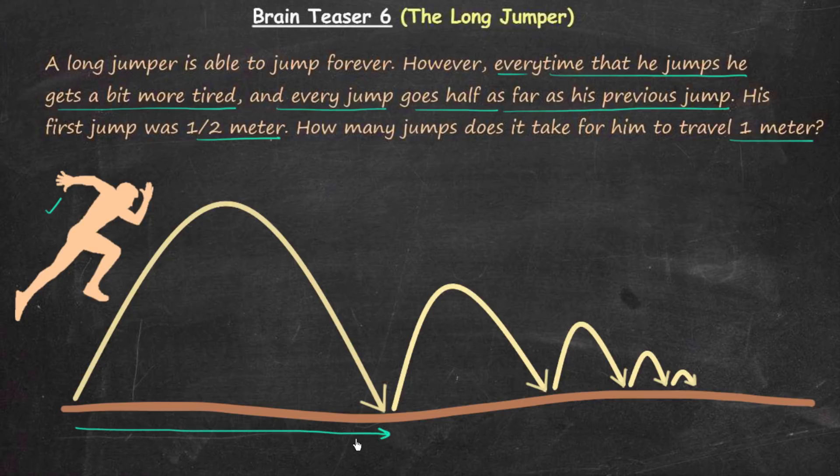Every time that he jumps he's getting tired, and therefore the length of the next jump is reducing. It is reducing by half as compared to his previous jump. So the second jump is 1/4 meter long because the first jump was half a meter long.